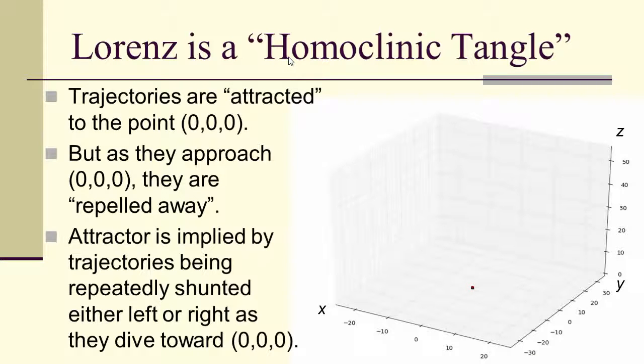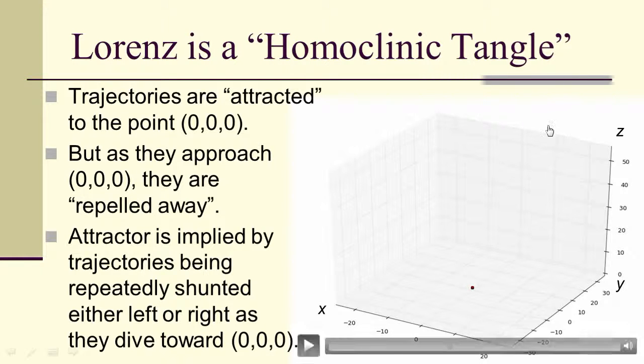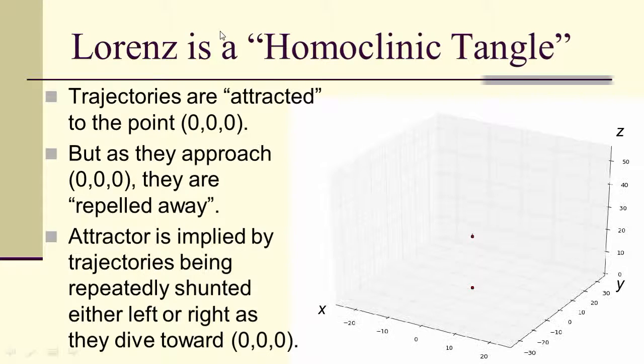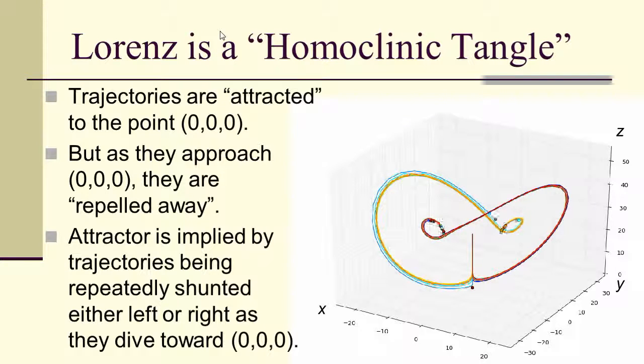Now, the Lorenz attractor is what's known as a homoclinic tangle. The trajectories are attracted to the point (0,0,0). In other words, that's really where they want to go. But they can't go there because as they try to go there, they get shifted away from (0,0,0). And there are infinitely many ways of approaching the (0,0,0) point. So every time they attempt to dive down to (0,0,0), they get kicked back up into the Lorenz attractor, where they have to run around for a little while before they try to dive back down toward the (0,0,0) point again.